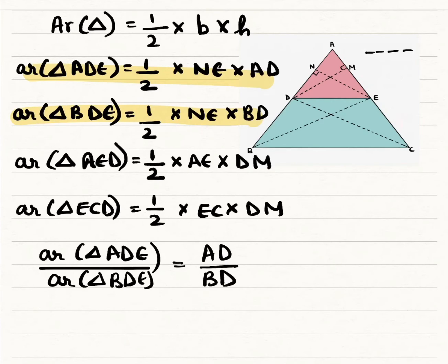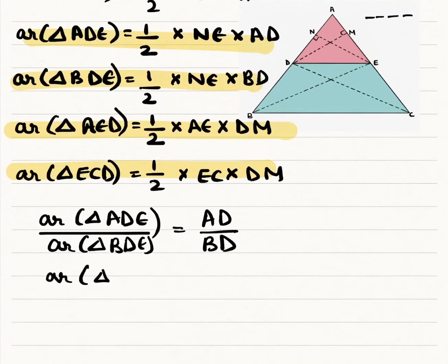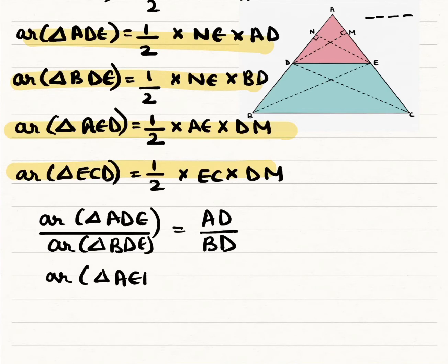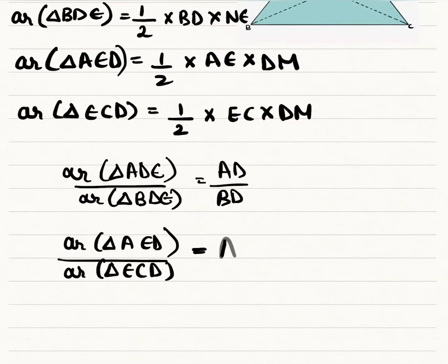And now similarly, if we divide area of triangle AED by area of triangle ECD, we get AE by EC.